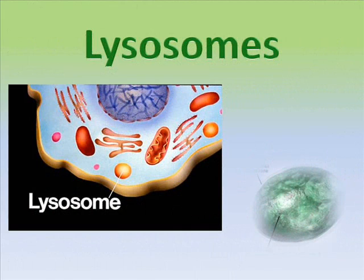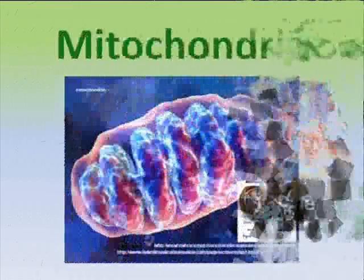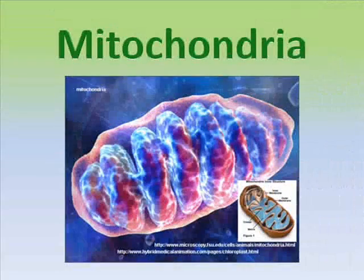Lysosomes are small organelles containing digestive enzymes that pass through the vacuole and kill excessive material and wastes. The mitochondria is a membrane that breaks down food to release energy and stores it in other molecules.